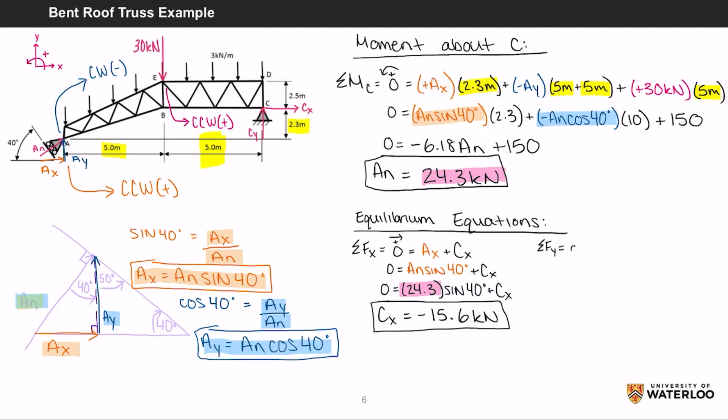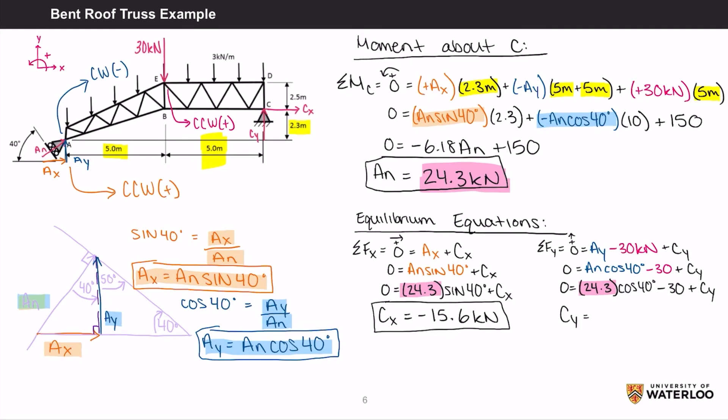The net force in the y direction equals zero in equilibrium, which equals AY subtract 30 kilonewtons plus CY. Substituting in AY for AN cos 40 and remembering that AN equals 24.3 kilonewtons, we get CY equals 11.4 kilonewtons.